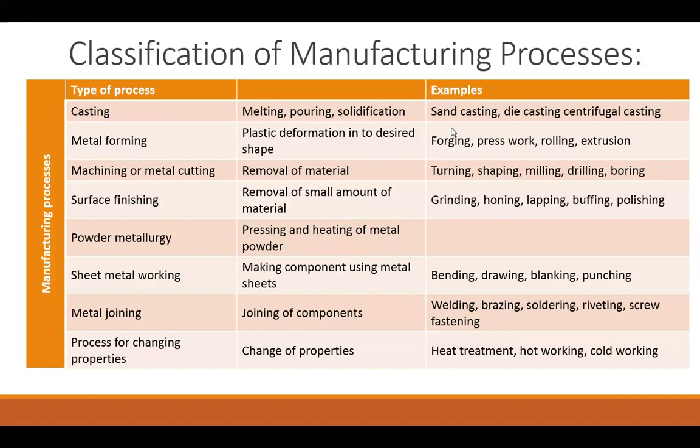The next method of manufacturing is Sheet Metal Working, wherein the finished products are manufactured from raw material sheets. The sheets are converted into the required finished product. Bending, drawing, blanking, and punching are the different sheet metal working operations.